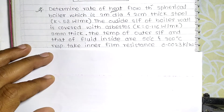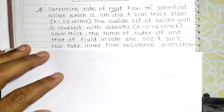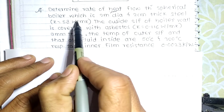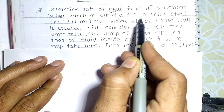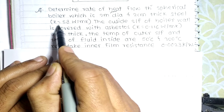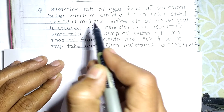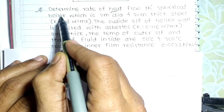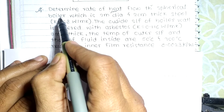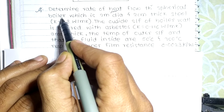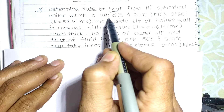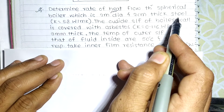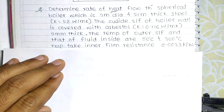Hello friends, welcome back to my new lecture. Today we are going to see the second problem of sphere. The problem: determine the rate of heat flow through a spherical boiler which has a 2 meter inner diameter and 2 centimeter thick steel, where K is equal to 58 watt per meter per Kelvin.